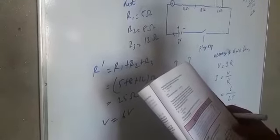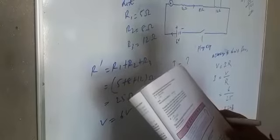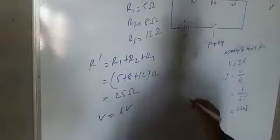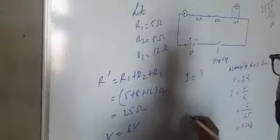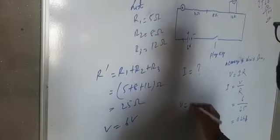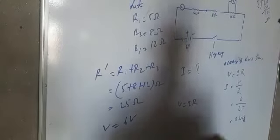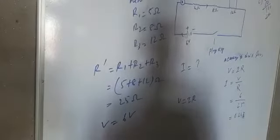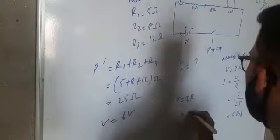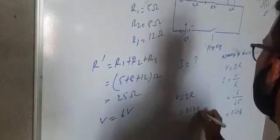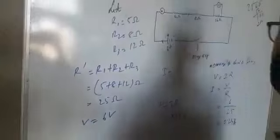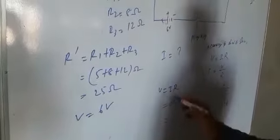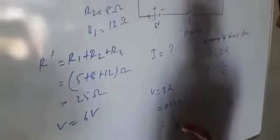The voltmeter measures the potential difference across the 12 ohm resistor. To find this potential difference, we use V equals IR. I is 0.24 amperes, which we already found, and R is 12 ohms. So multiply 0.24 by 12 to get the result.